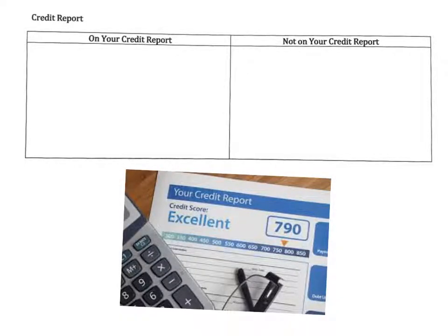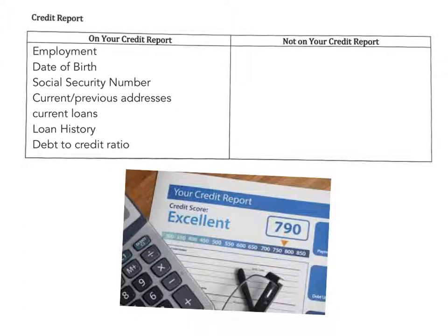Now let's take a look at the credit report, which comes with using a credit card or any type of loan. A credit report tells lenders if you would be a good candidate to give a loan to, and you can get a free credit report once a year. Things on your credit report include your employment, date of birth, and social security number to identify you; your current and previous addresses; current loans and credit cards; your loan history; and your debt-to-credit ratio.